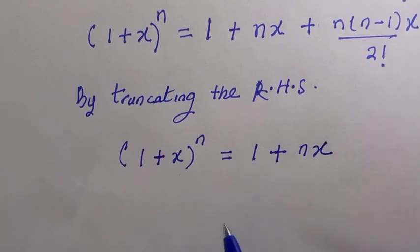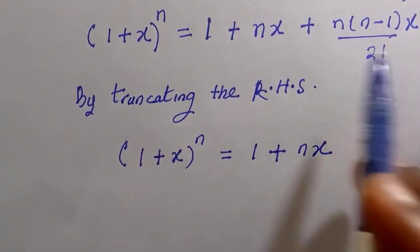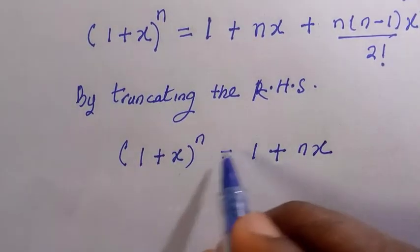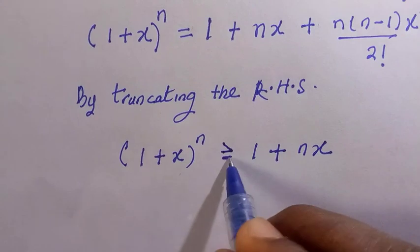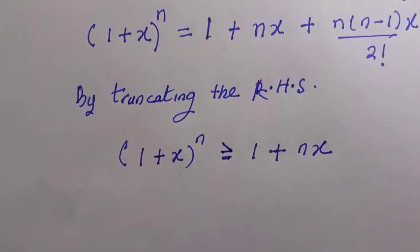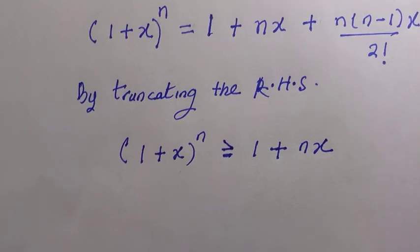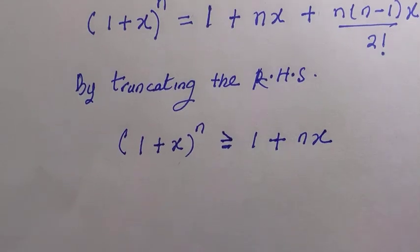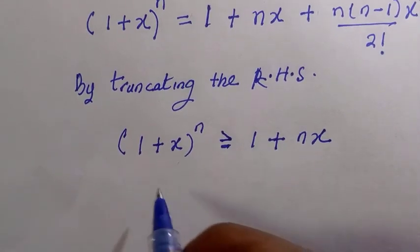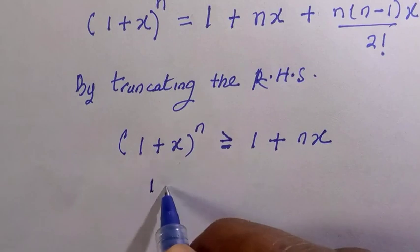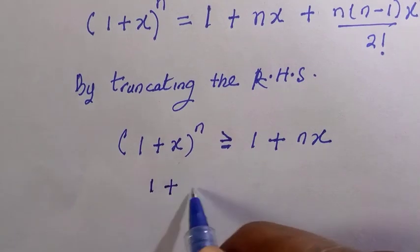But can we just consider this as equals to? No. So after we have truncated, we consider this as greater than or equals to, because of the power of 1 plus x which is n. That is, no matter what value of n we plug in, it must always be greater than or equals to 1 plus nx.